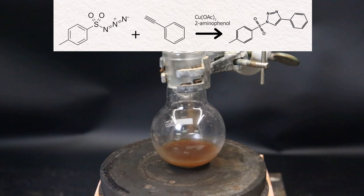In this click reaction, we are coupling tosyl azide and ethinyl benzene. The copper 2-acetate monohydrate is the catalyst and 2-aminophenol is the reducing agent. The 2-aminophenol will convert the copper 2+ to copper 1+ which will catalyze the reaction.